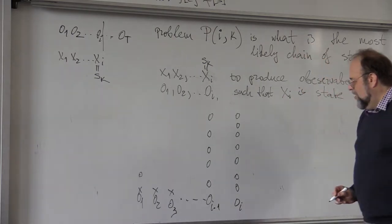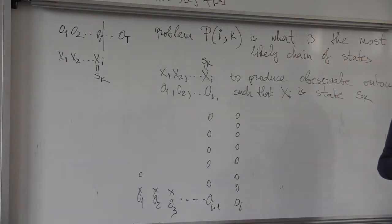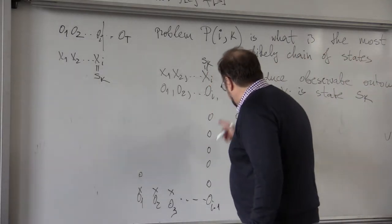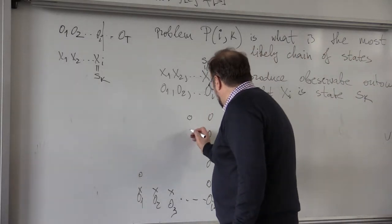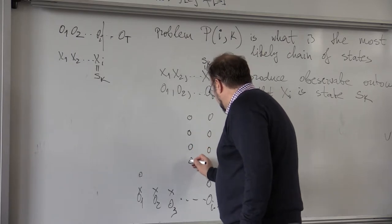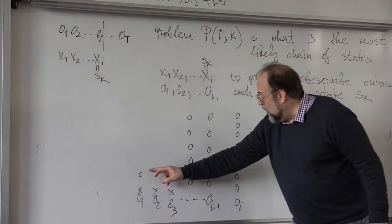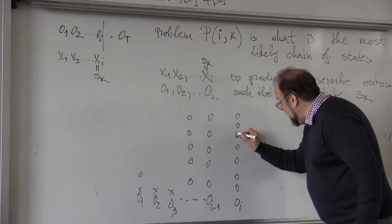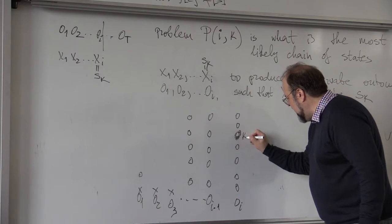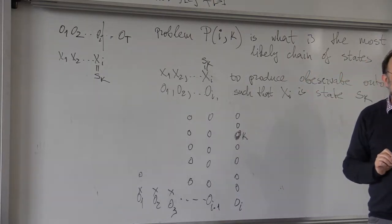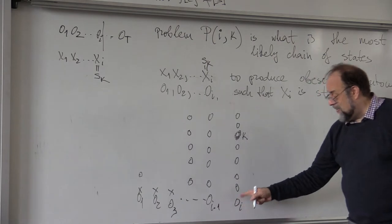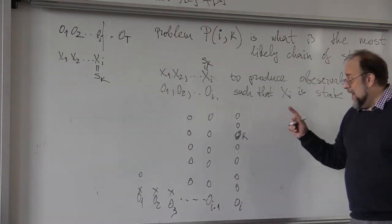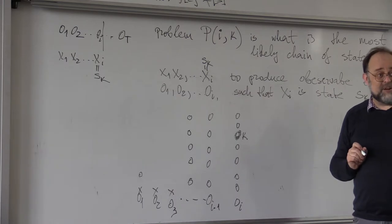So now what I compute is, here vertically, these are always all possible states. And I want to find what is the path to these states that definitely ends up here at the Kth state, that is most likely to produce this outcome.